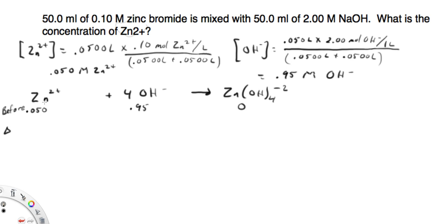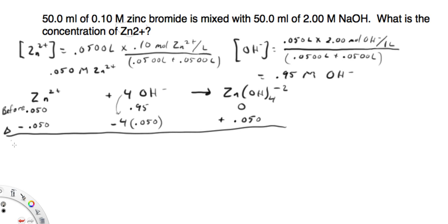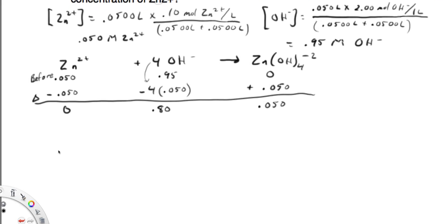Then my change row: zinc is going to go down — we're going to assume it's all used up. The hydroxide change should be negative 4 times that amount, so a 4 because of the mole ratio. Then my complex ion is going to increase. So after the reaction goes to completion: zinc is 0, hydroxide is 0.80, and the complex ion is 0.050. Those are our initial concentrations once we set up the equilibrium.